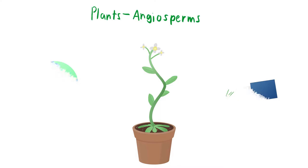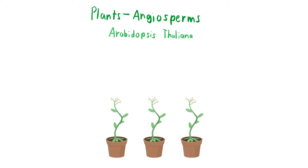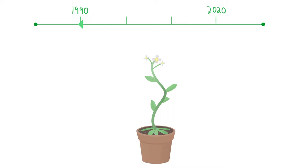Angiosperms are also routinely used in scientific research as they make great model organisms, one being Arabidopsis thaliana, a small flowering plant studied due to its small size and rapid life cycle. We're going to talk about a paper published in 1990 that used Arabidopsis to clone and characterize a certain gene, named Agamous.